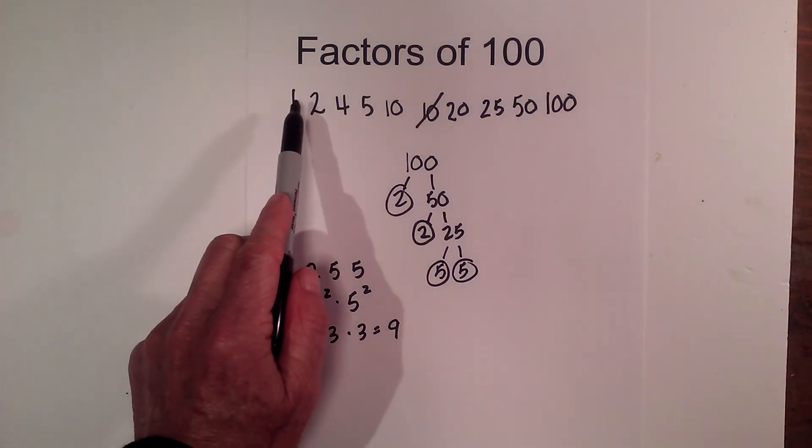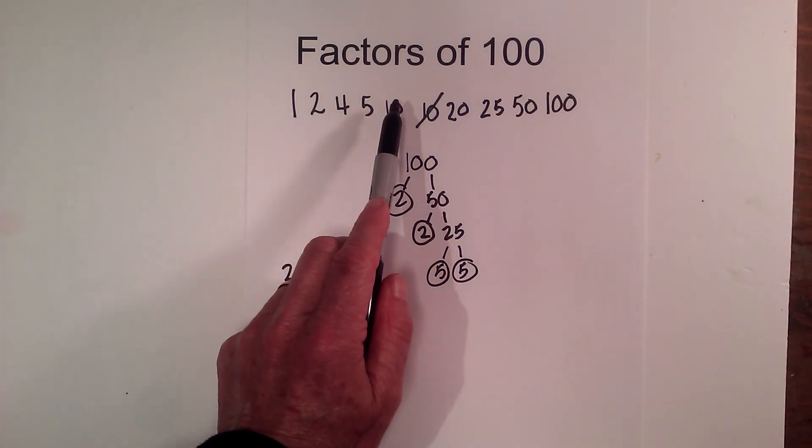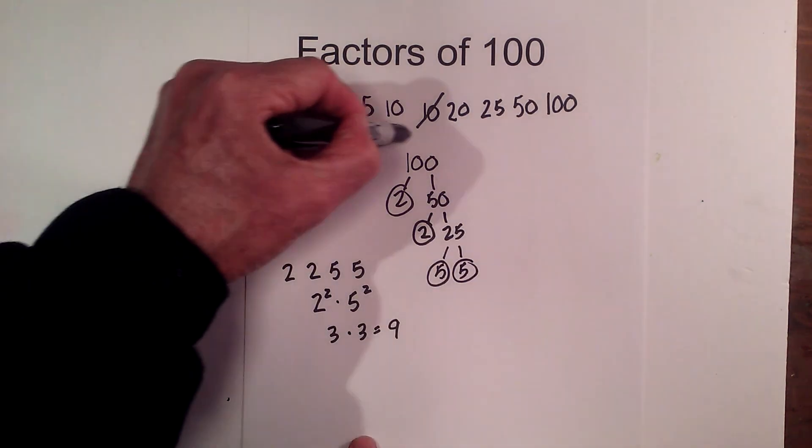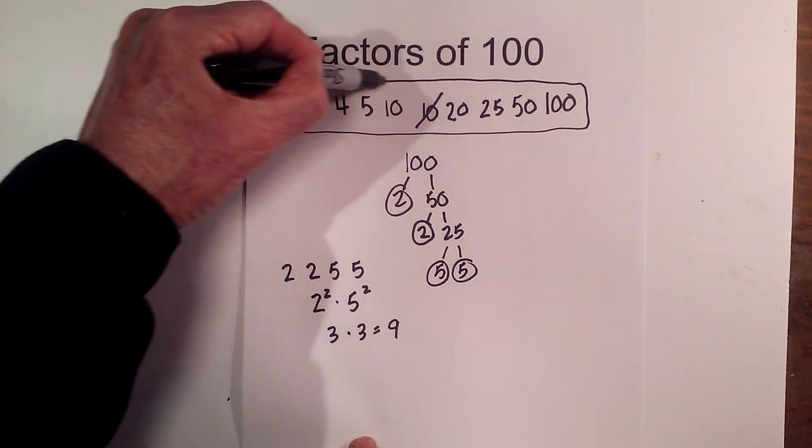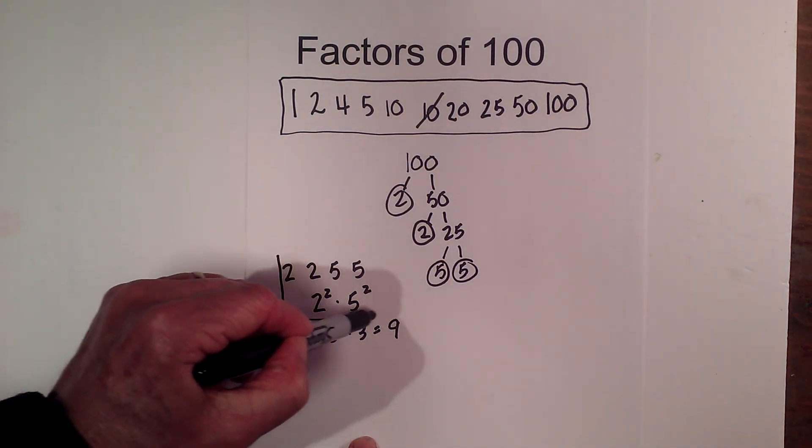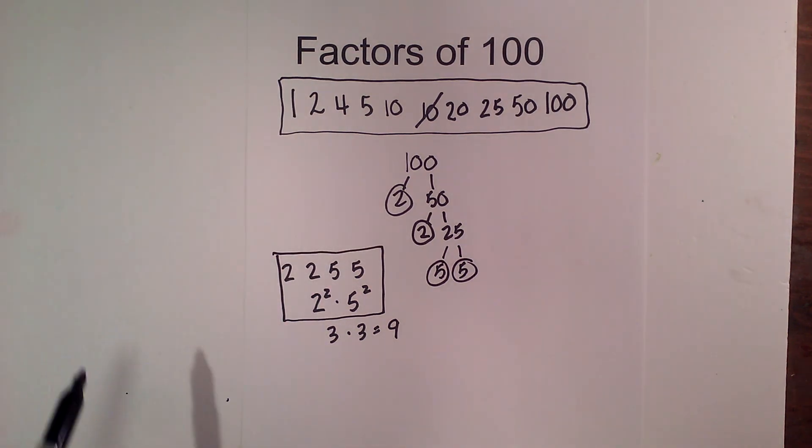So let's count: 1, 2, 3, 4, 5, 6, 7, 8, 9. So I have all the factors of 100. I will circle them, and as a bonus here are your prime factors of 100. I hope that helps, and this playlist, if you need more information on finding factors, should help.